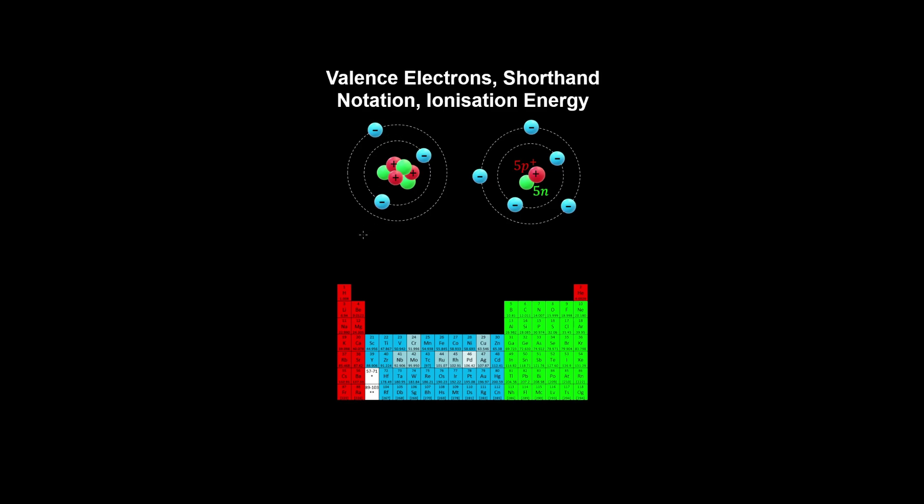So for example, for lithium, we have the electron configuration of helium and one electron in a 2S subshell. And similarly for boron, we have the following electron configuration.